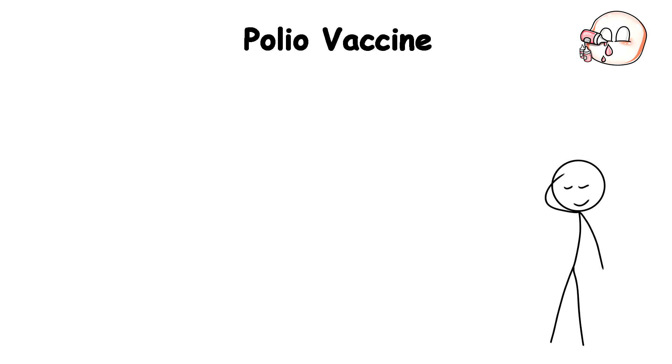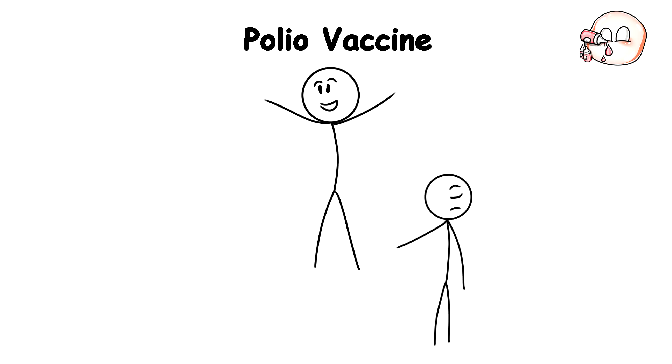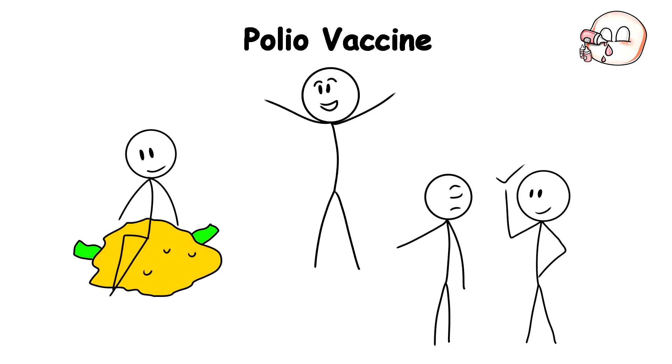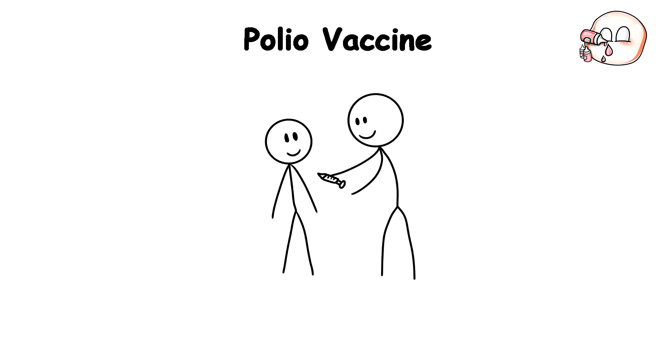Soon afterward, a field trial was undertaken immunizing nearly 2 million US children with what became known as the Salk vaccine. Perhaps the most exciting thing he did was refuse to patent it despite the fact that this would have made him the wealthiest man in the world at the time, as he believed everyone needed to get the vaccine.